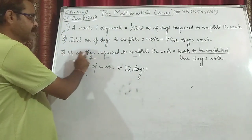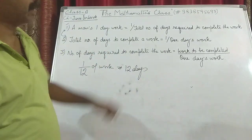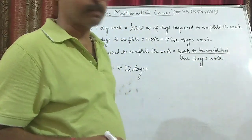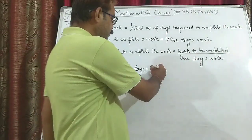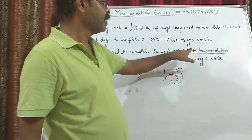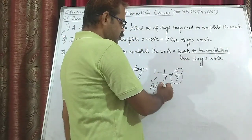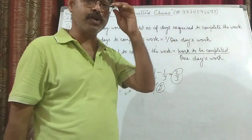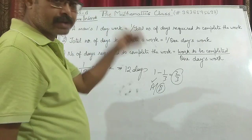The third point: the number of days required to complete the work is given by work to be completed divided by one day's work of that person. For example, suppose two people were working and one of them left when one-third of the work was completed. So 1 minus 1/3 means 2/3 of work is left. If A left, then it will be 2/3 upon B's one-day work. We will be discussing questions based on these three formulas. Please note them down — they are very important and should be in your fair copy.